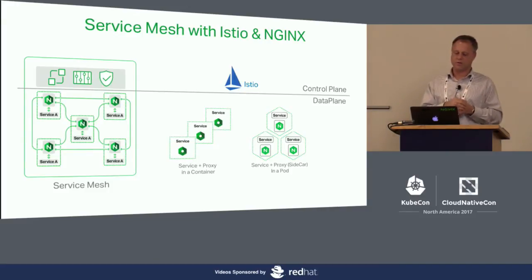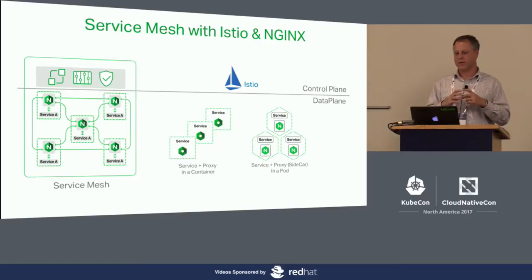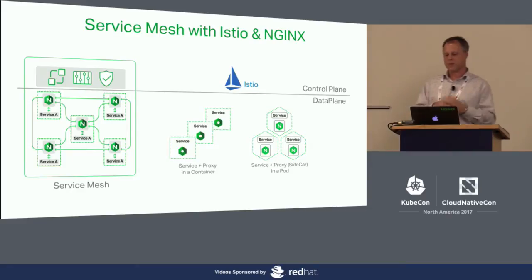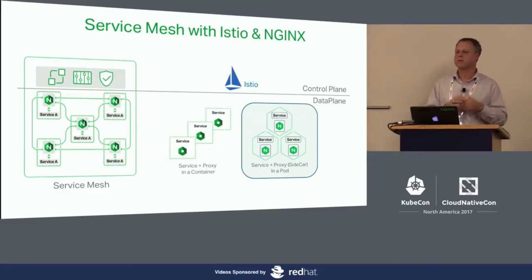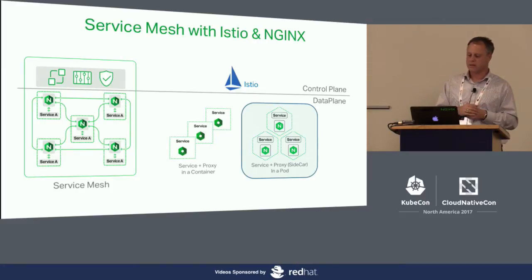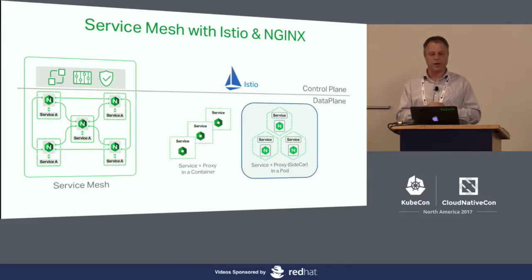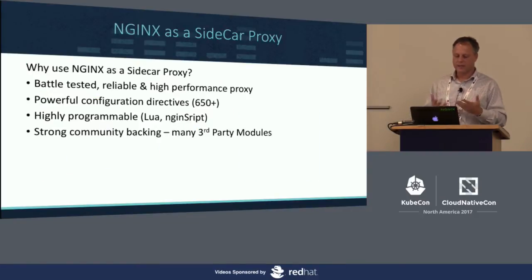On the data plane side, you have two implementation choices. One is service plus proxy in a container, where you deploy a product such as UNIT, announced back in September. UNIT enables you to run workloads within the same container where the services mesh is happening, so you're deploying just one element in your network — no sidecar needed. The second implementation pattern is when you run the service and a proxy side by side in a sidecar-like environment.